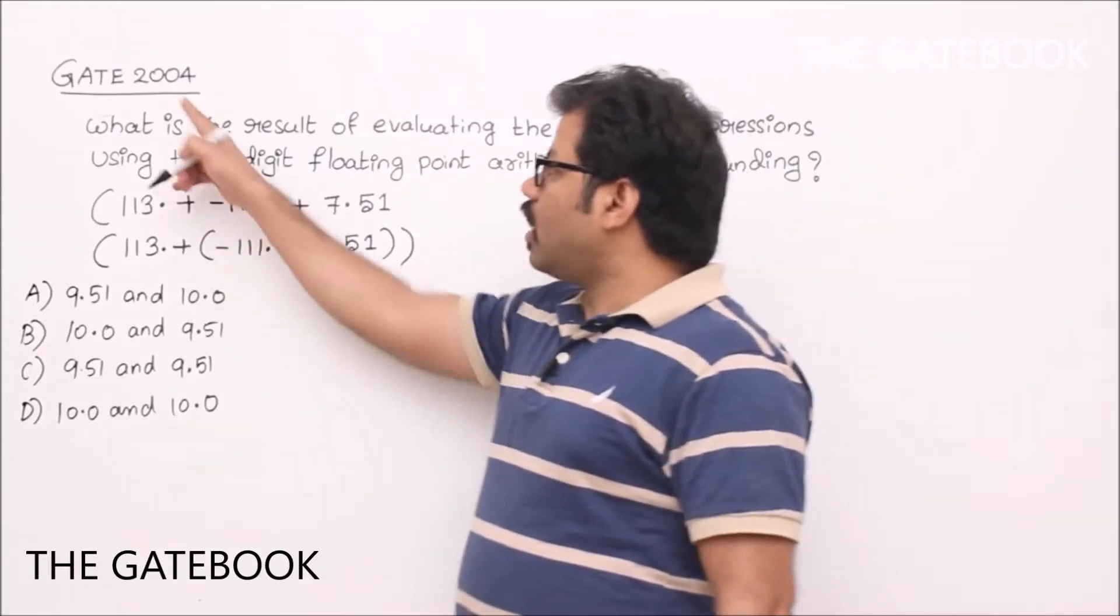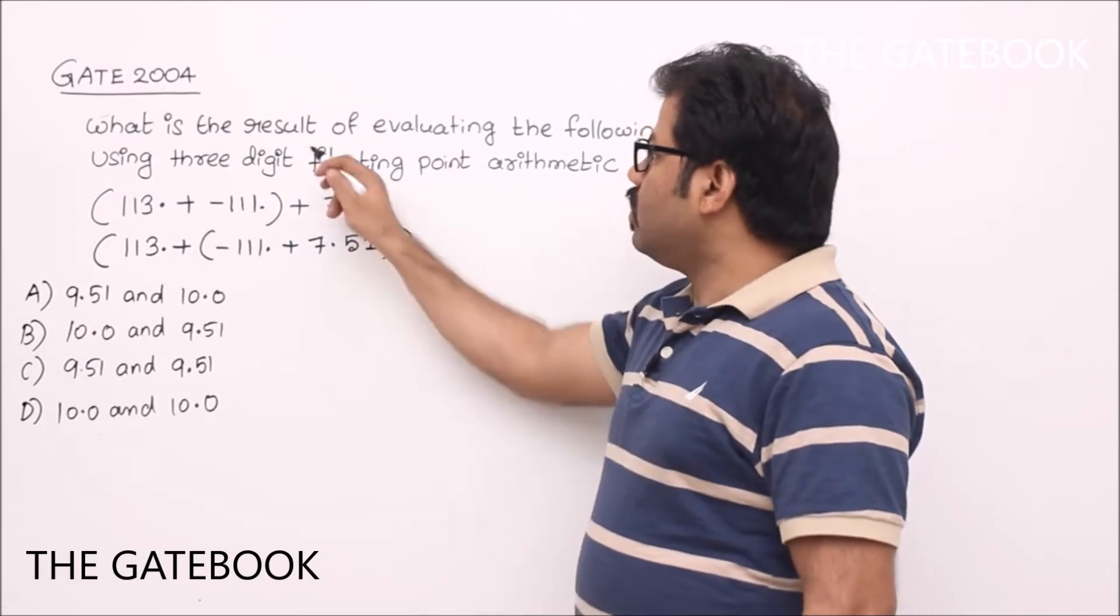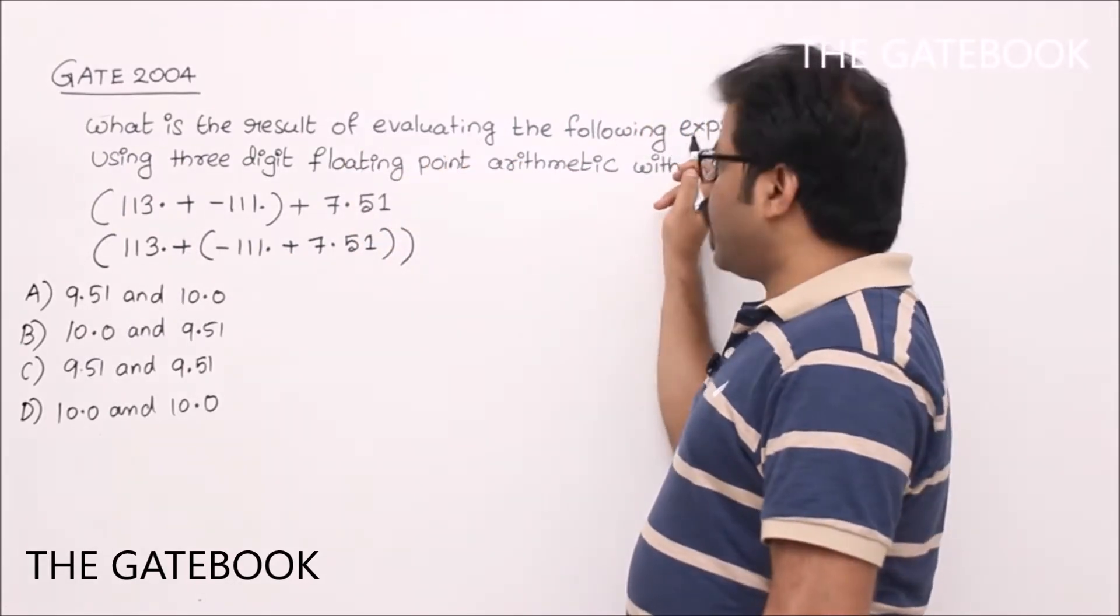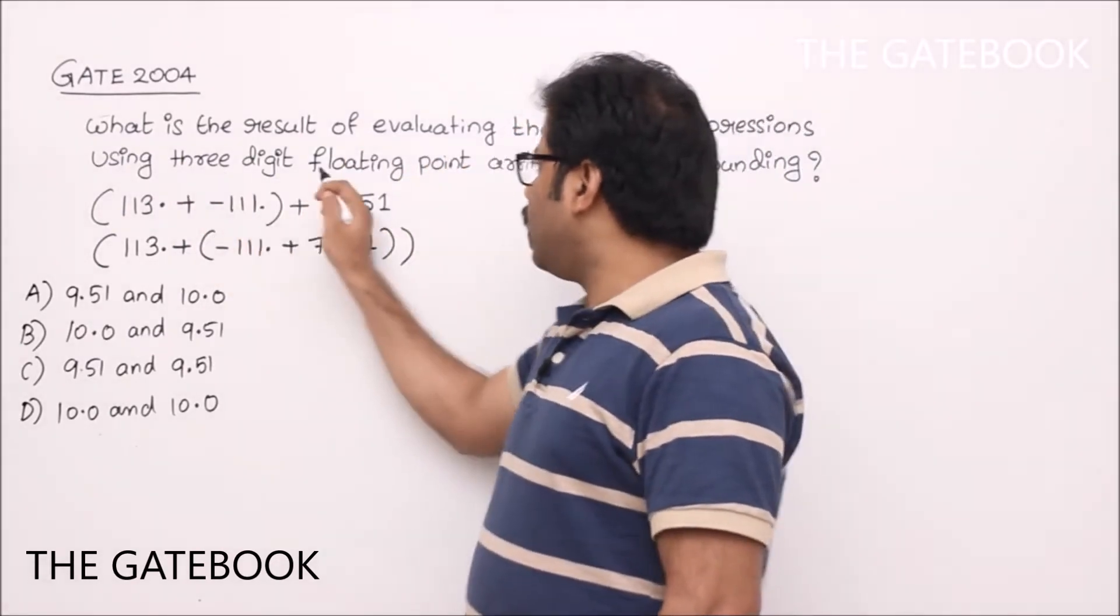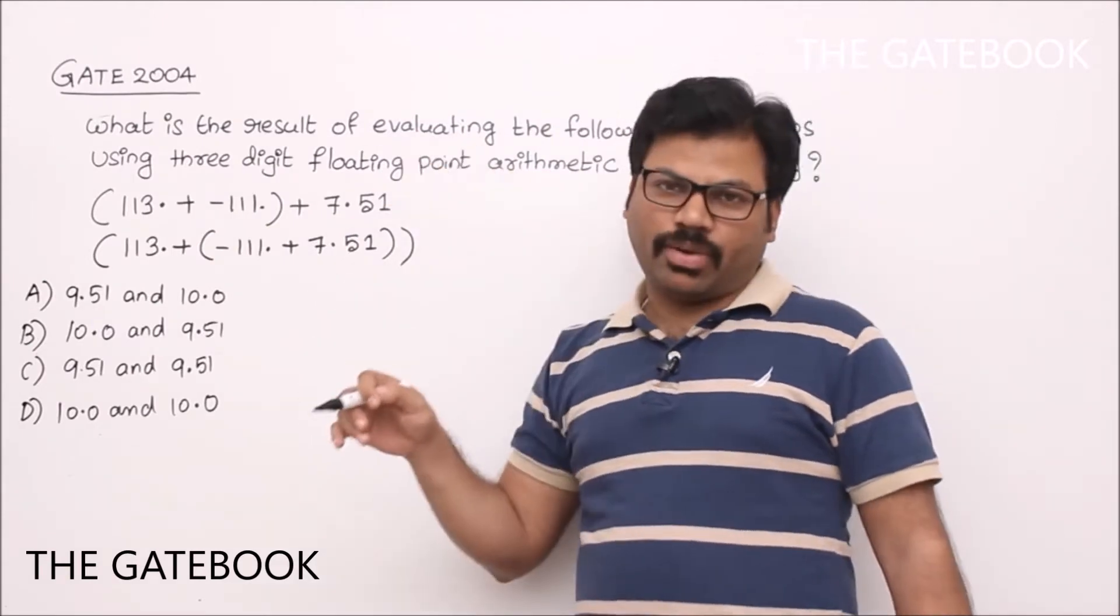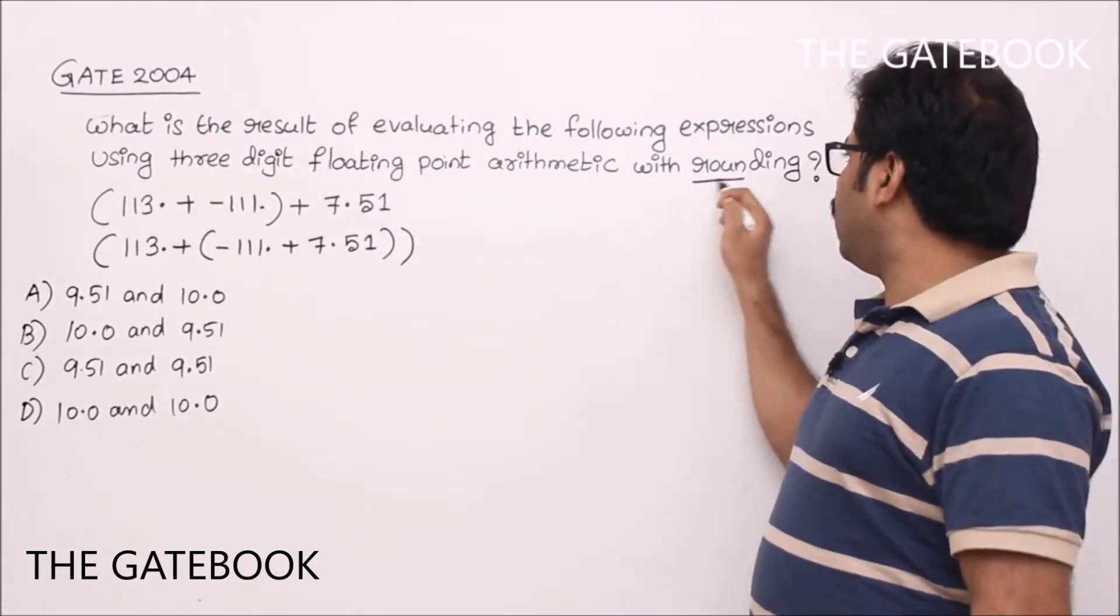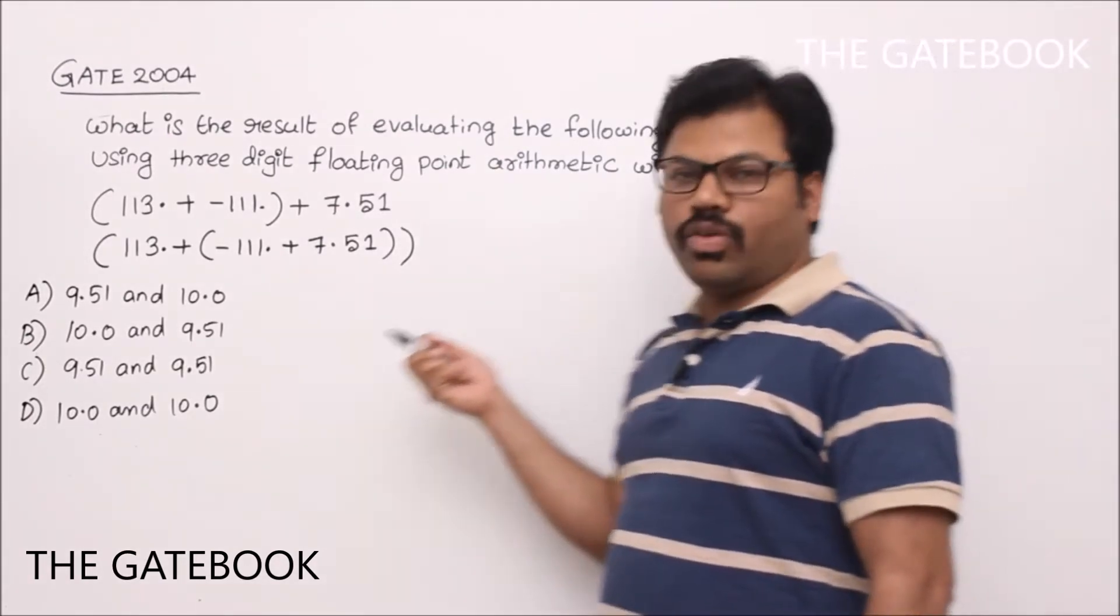Now we'll see one question which is asked in Gate 2004 paper. What is the result of evaluating the following expressions using three digit floating point arithmetic? Already I explained you what is three digit floating point, right? Arithmetic with rounding. So here the main concern is rounding.